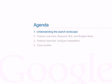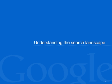In this course, we'll talk about the search landscape and why we created the opportunities tab. We'll explain the benefits of its three main features: keyword, bid and budget ideas. We'll show you how to use the opportunities tab to analyse your competition. And we'll share some interesting case studies from businesses that have used the opportunities tab. So why did we create the opportunities tab?